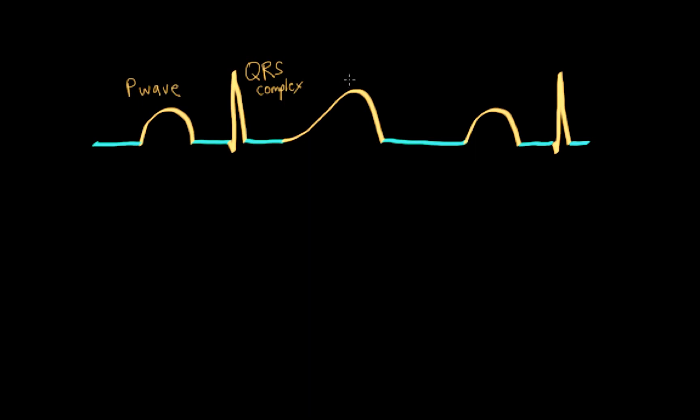The final important waveform is called the T wave, and it represents ventricle myocyte repolarization. I just want to point out that the T wave here has an asymmetric shape. That is, the peak is closer to the end of the wave than it is to the beginning.